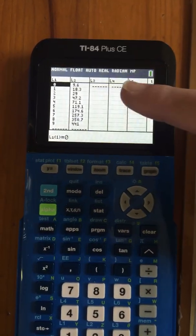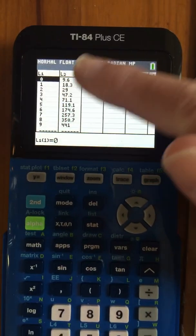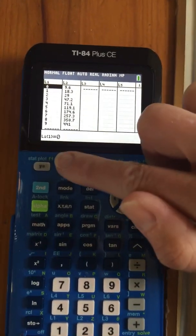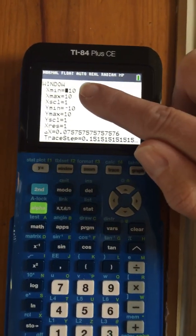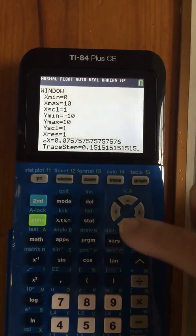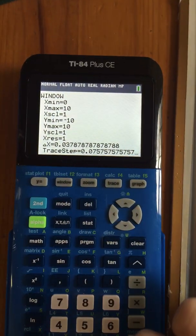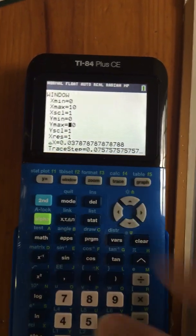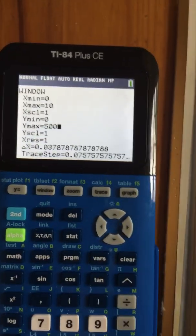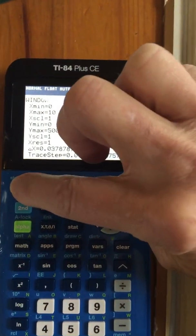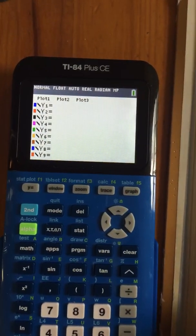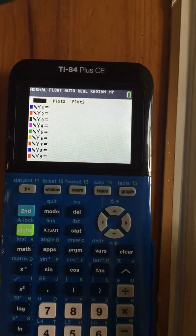So they want me to do a scatter plot of this. Now, I'm going to have to adjust my window, because see how that goes to almost 500? My standard window isn't going to work for that. So I'm going to go to window. I don't have any negative numbers, so I'm going to make my x minimum 0. My y minimum, I don't have any negative numbers, so I'm going to make it 0, but my y max needs to be 500 for it to show, and I want a scatter plot. So I'm going to go over here, and I'm going to turn back on plot 1, which I already have set to be a scatter plot.